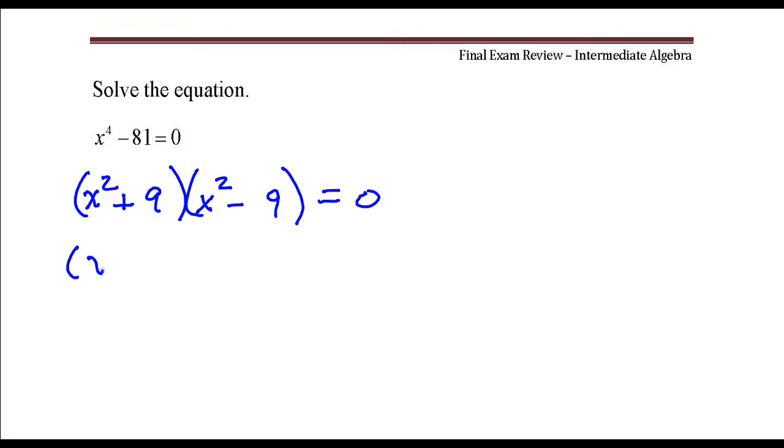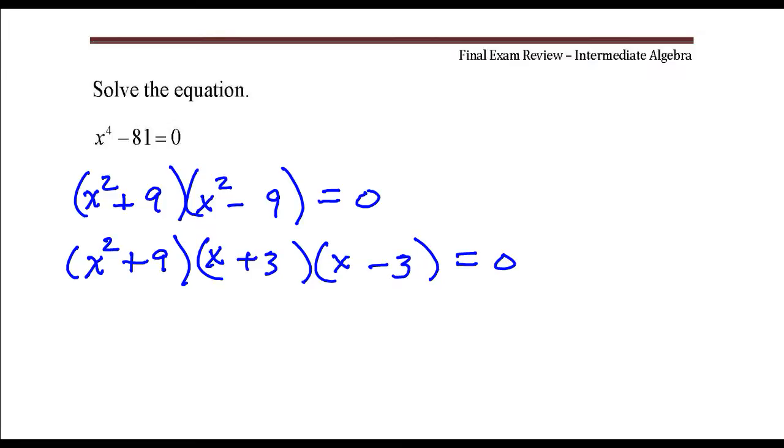Okay, so we have X squared plus 9, and X squared minus 9 gets factored into X plus 3, X minus 3. Okay, so we're finished factoring. We're going to set each of these factors equal to zero and solve.